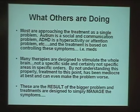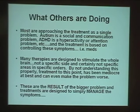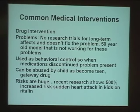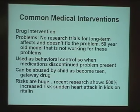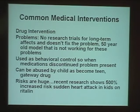These treatments are designed simply to manage symptoms. The bigger problem is that your child doesn't necessarily have autism or ADHD — they have a brain imbalance. That's the problem. Common medical interventions — drugs — don't fix anything, they just cover the problem up. I'm not opposed to drugs short term, but as the only plan it's a very poor plan. Studies show a 500% increase in sudden heart attack in kids on Ritalin, and there are no long-term studies on these medications.